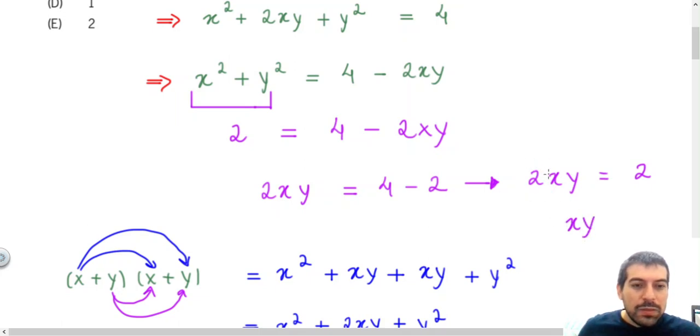And finally, look, this term here is multiplying x times y, so if I send this 2 to the other side, this 2 will divide this 2 that we have in the right. So in the end, we'll get that xy will be 2 divided by 2...